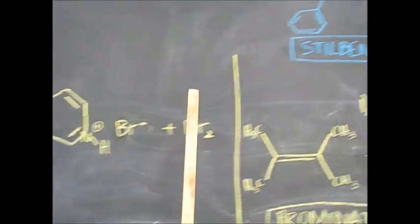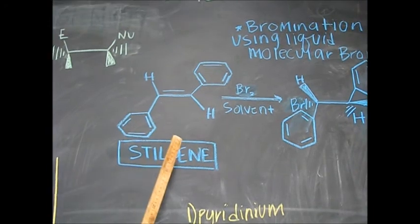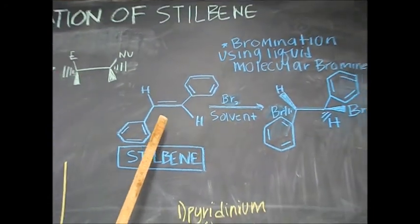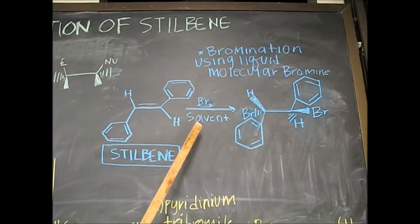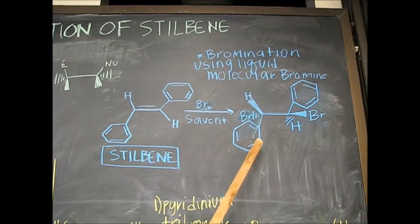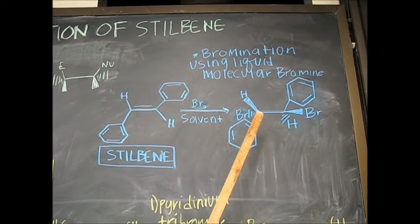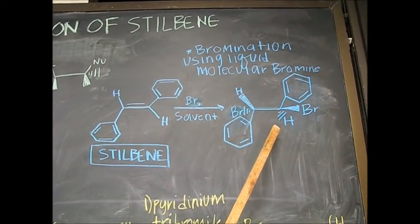So we're using this mechanism in our bromination of stilbene. Stilbene is an alkene. It's going to interact with Br2 in a solvent to produce an anti-addition of bromine.